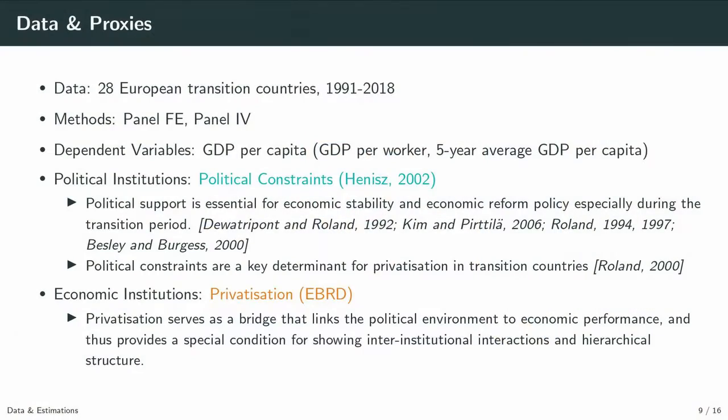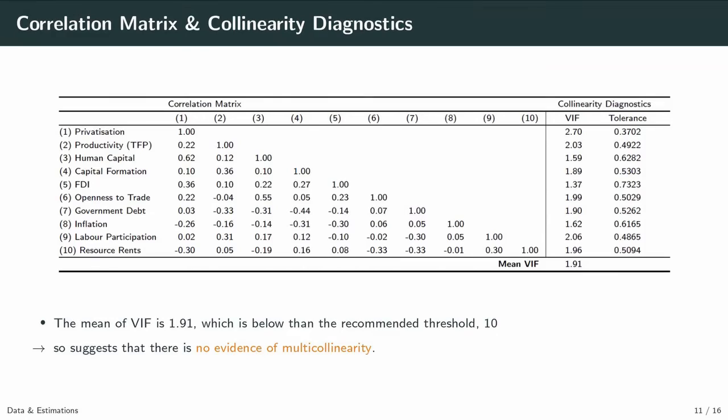I selected political constraints from HENIS as the proxy for political institutions, because political support is essential for economic stability and reform policy, especially during the transition period, and it has been widely used in previous studies. I used privatization from EBRD as the proxy for economic institutions, because privatization is the most characteristic variable showing changes in the economic system of transition countries. This table provides a correlation matrix and collinearity diagnostics. The mean VIF is 1.91, so there is no evidence of multicollinearity.